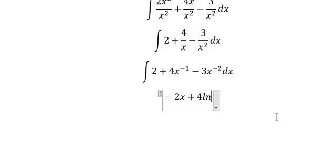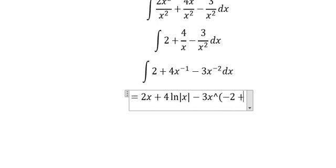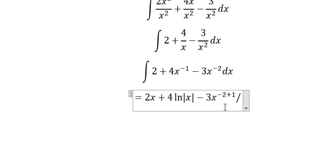4 ln|x|. For the next term, -3/x², we have -3 multiplied by x^(-2). Using the power rule: -2 + 1 = -1, so the denominator is -1.